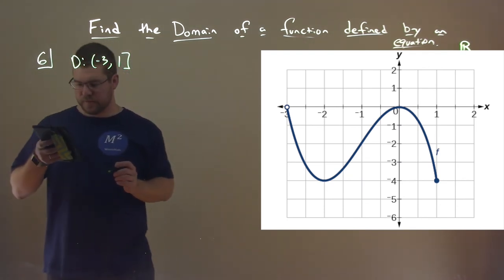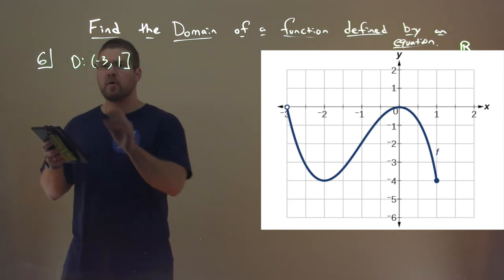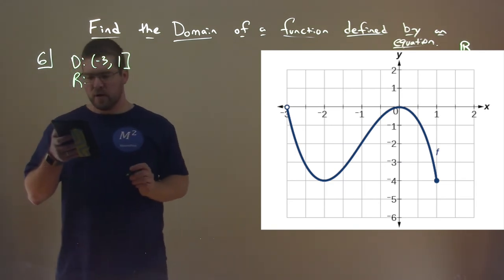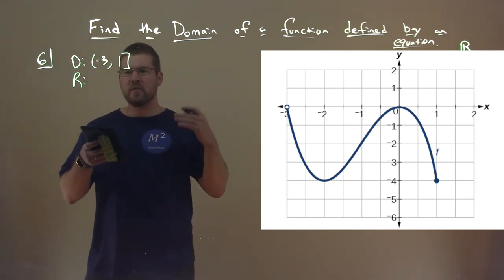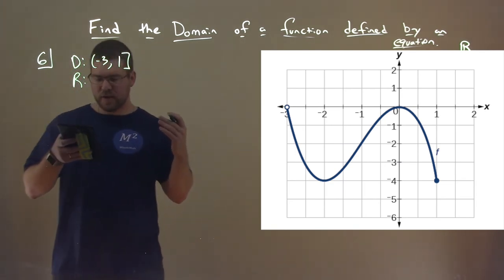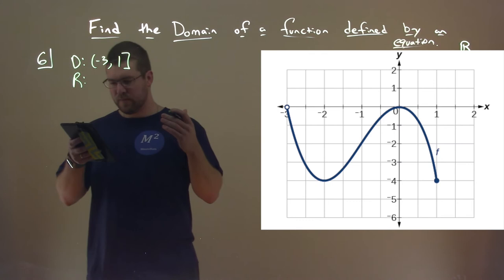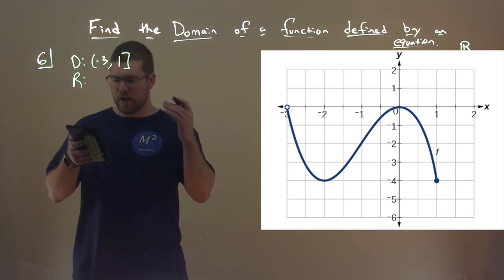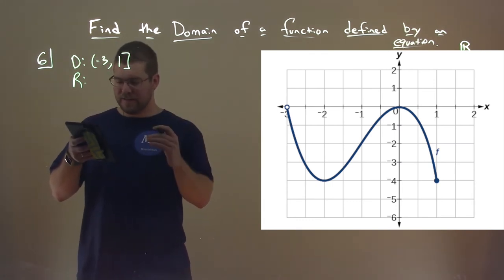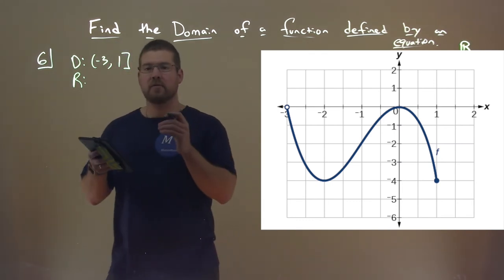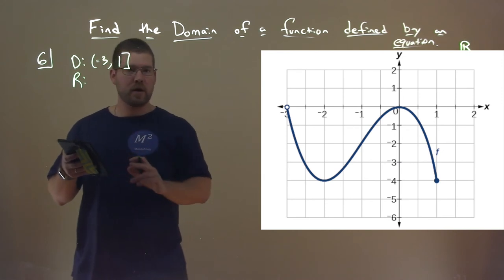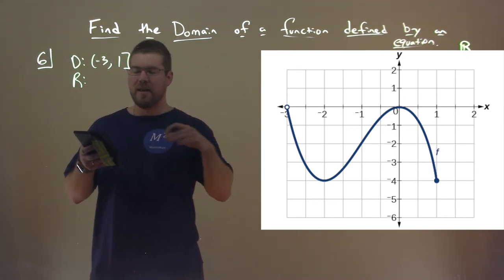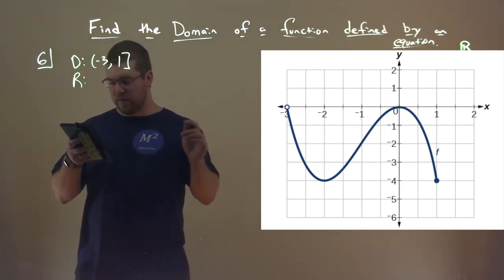What about the range? The highest value we see is 0, and the lowest value is negative 4. Negative 4 is hit twice — at the first bottom of the cusp and at the endpoint.